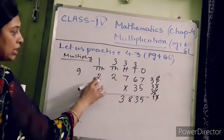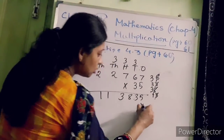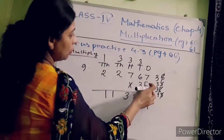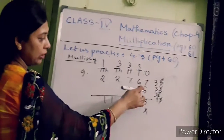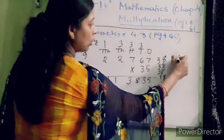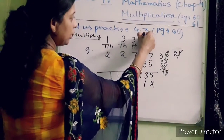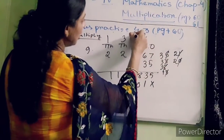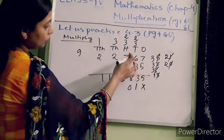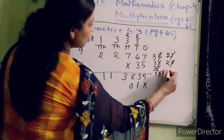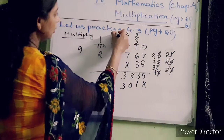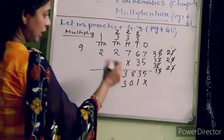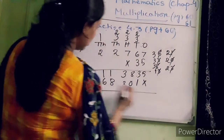Now put a cross on the units place. Now you have to multiply this number with three. Three into seven is twenty-one — cut one and write here, two on the tens place. Three into six is eighteen, eighteen plus two is twenty — cut zero and write here, two on the hundreds place. Three into seven is twenty-one, twenty-one plus two is twenty-three — cut three and write here, two on the thousands place. Three into two is six, six plus two is eight. Three into two is six.